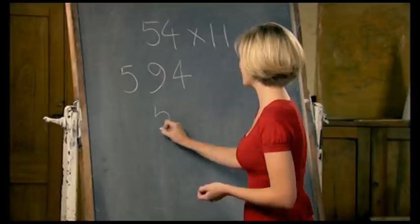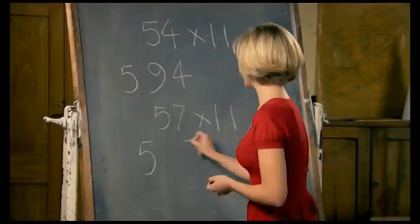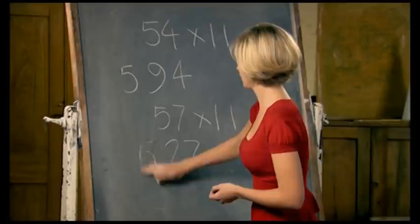The only thing you have to worry about is if these two digits add up to something more than 9. So, for example, 57 times 11. Again, we'll split the digits. 5 here, 7 here, 5 add 7 is 12. Put the 2 there, and we have to carry over the 1. 5 plus 1 is 6, 627, and it's as simple as that.